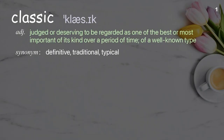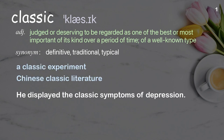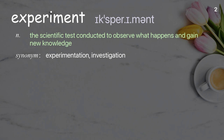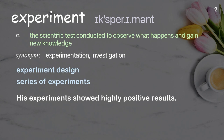Classic: judged or deserving to be regarded as one of the best or most important of its kind over a period of time; of a well-known type. Examples: a classic experiment, Chinese classic literature. He displayed the classic symptoms of depression.